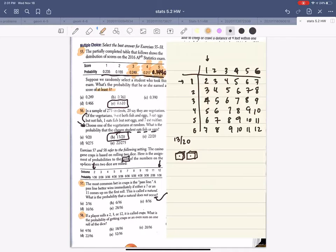It says the most common bet in craps is the pass line. A pass line better wins immediately if either a 7 or an 11 come up on the first roll. This is called a natural. What is the probability that it does not occur?